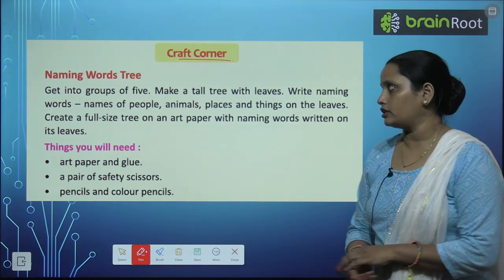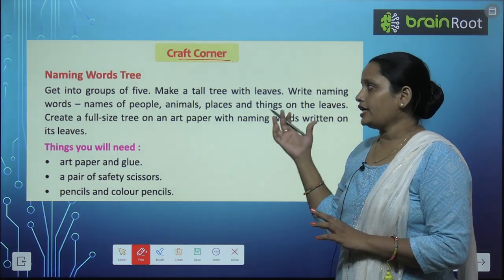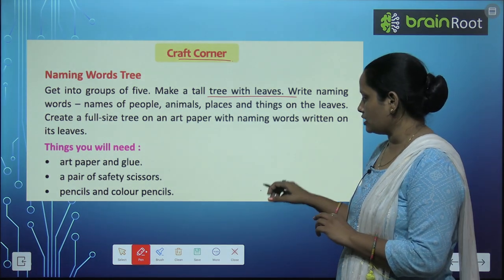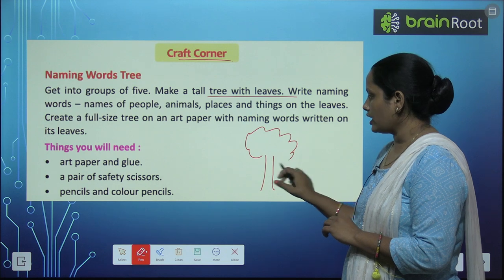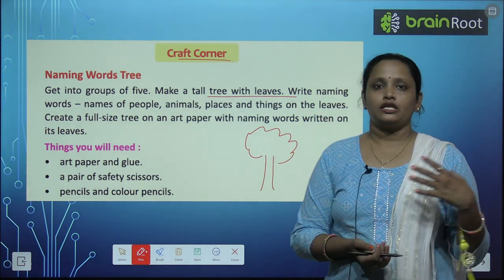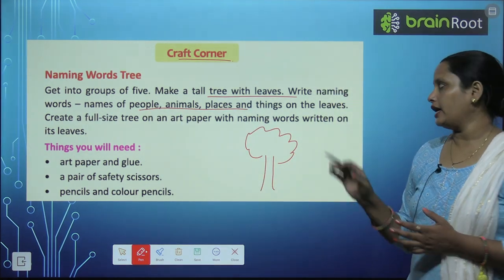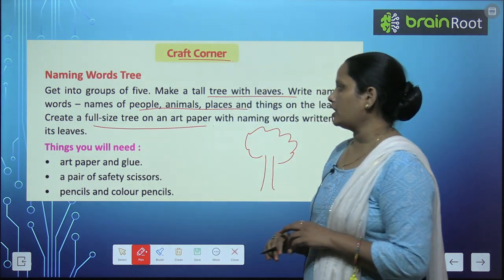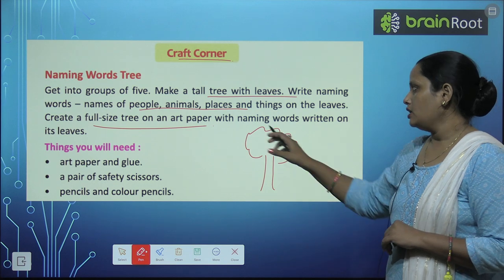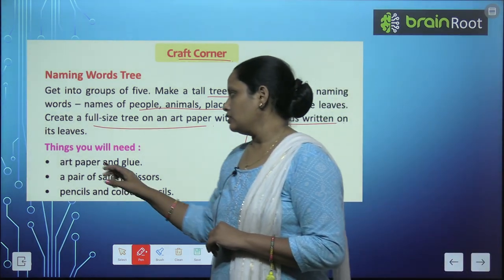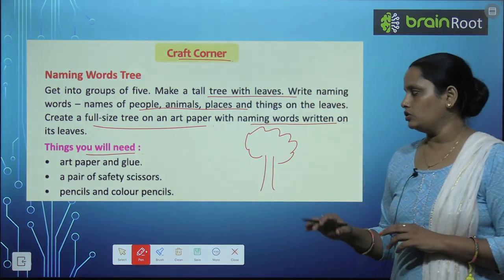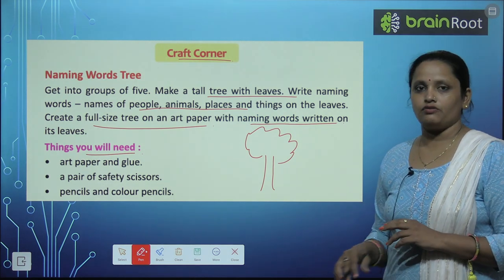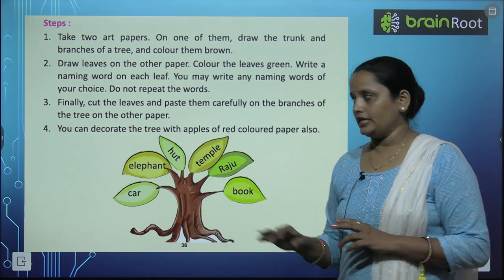Now let's come to the craft corner. Naming words craft — get into groups of five. आपको five बच्चों का group बनाना है. Make a tall tree with leaves — एक बड़ा सा tree बनाना है जिसमें बहुत सारे leaves होंगे. Write naming words — names of people, animals, places and things — on the leaves. Create a full-size tree on an art paper with naming words written on its leaves.